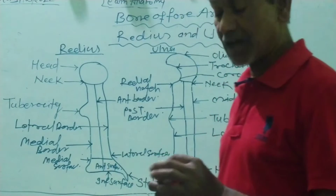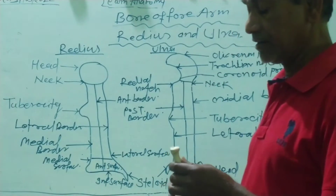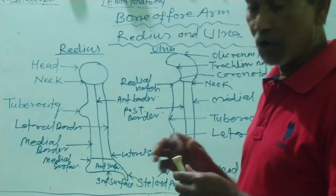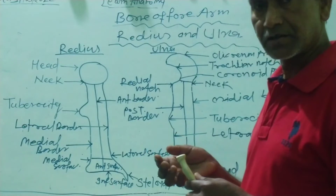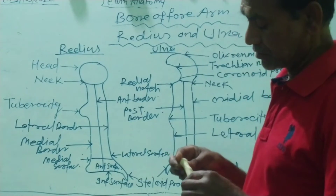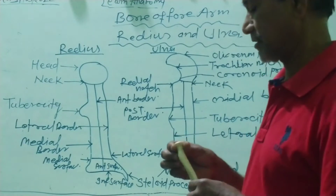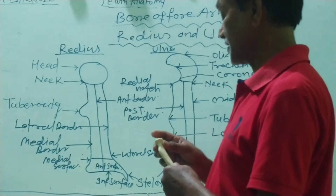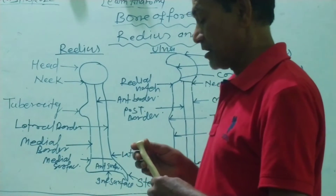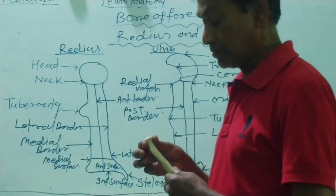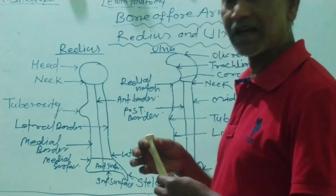The head of the radius is formed by hyaline cartilage and lies rounded or disc-shaped, just opposite to a cap-like structure. This is known as the upper end of the radius, or the head of the radius. Below the head is a rounded eminence or projection known as the neck.